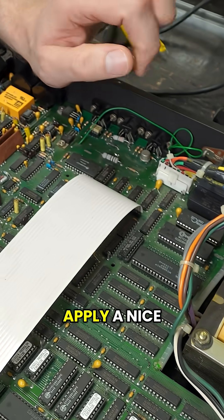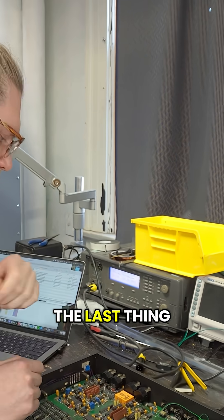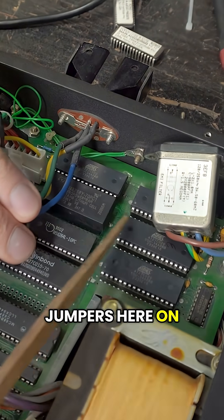We're going to apply a nice looking label to them so it's not just written with a marker. Oh yeah, the last thing that we need to discuss, and we don't actually have to do anything on this particular unit, but there's these jumpers here on the H3000.